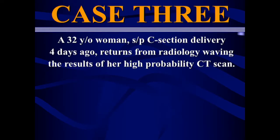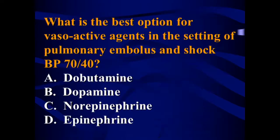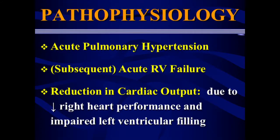Case three: a 32-year-old woman, four days post C-section, returns from radiology with a high-probability CT scan. She suddenly becomes agitated, her sats drop, blood pressure is 80/40, pulse is 132, respiratory rate is 34. You give a 2-liter fluid bolus of normal saline — which results not in an increase but actually a decrease in blood pressure. This is massive PE. What's the best vasoactive agent with a blood pressure of 70/40? The evidence points to norepinephrine, though that evidence is based on animal models.